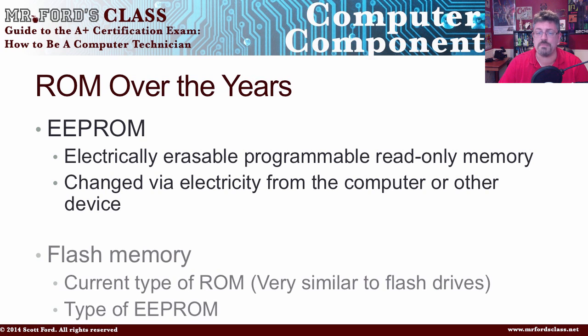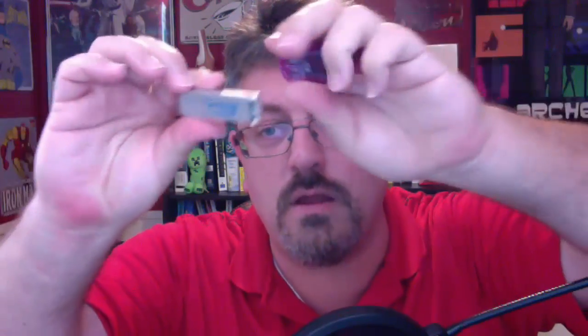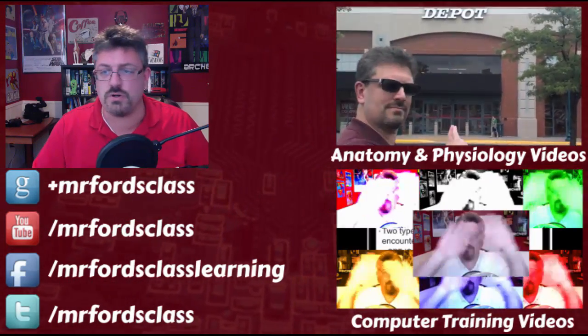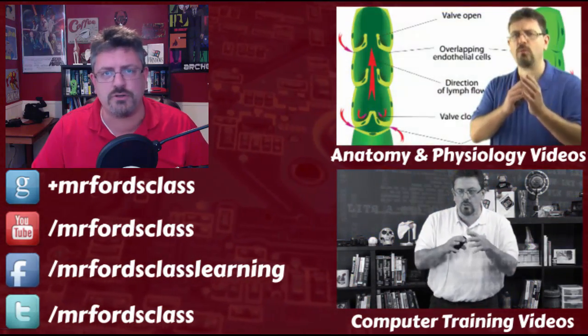The most current type of ROM is your flash memory. The card I just showed you from my camera, your thumb drives — these are all flash memory. You can update it, change it, delete it, add to it, all that fun stuff, very similar to your flash drive. That's an overview of the different storage devices. In our next video, we're going to start taking a look at different input devices.